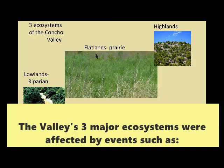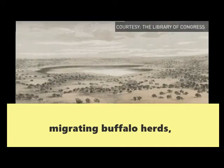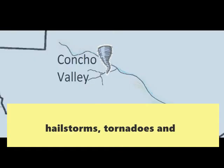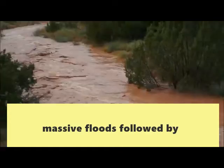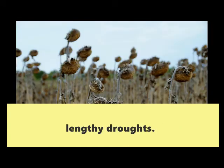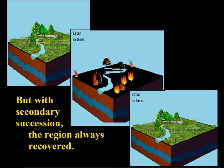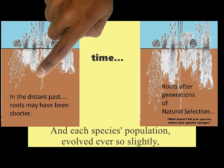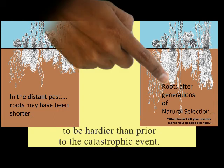The Concho Valley's three major ecosystems were affected by events such as migrating buffalo herds, prairie fires, hailstorms, tornadoes, and massive floods, followed by lengthy droughts. But with secondary succession, the region always recovered, and each species population evolved ever so slightly to be hardier than prior to the catastrophic event.